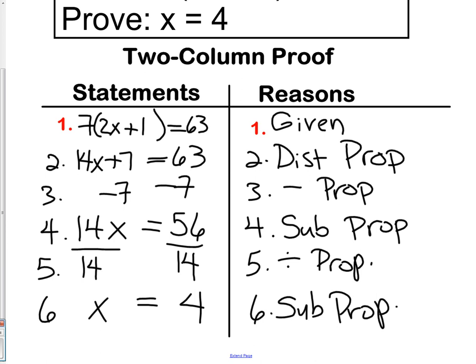Hopefully you've taken the time to try and attempt this proof. The given information was 7 times the quantity 2x plus 1 equals 63 — that was given. We then distributed the 7 using the distributive property. Next, we subtracted 7 using the subtraction property. As we reduce that down, we use the substitution property. We divided by 14, which is the division property. And lastly, we substituted to get our final answer of x equals 4.